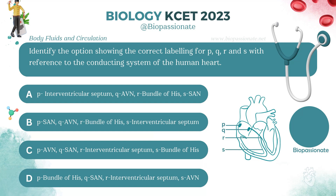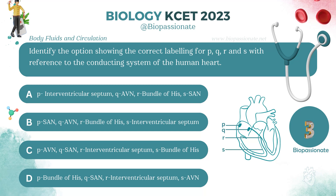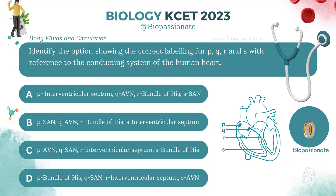Identify the option showing the character labeling for P, Q, R, and S with reference to the conducting system of the human heart. Answer: Option B.